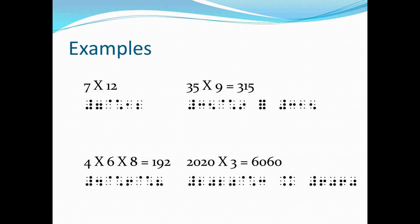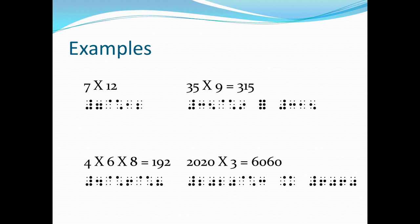For the next example, we have the equation 35 times 9 is equal to 315. We need to write the numeric indicator, then digits 3 and 5 in Nemeth, and the multiplication cross — dot 4 and dots 1 and 6. There should be no space before and after the sign, and no numeric indicator before 9, so we write number 9 right after the multiplication sign. Then we put a space before the equal sign — that's dots 4 and 6 on the first cell and dots 1 and 3 on the second cell — then the answer 315, with a numeric indicator and digits 3, 1, and 5.